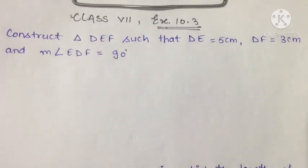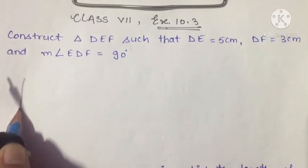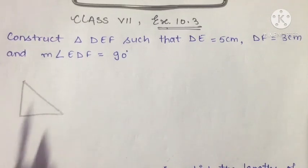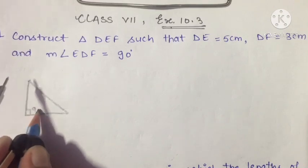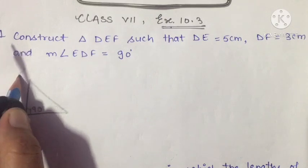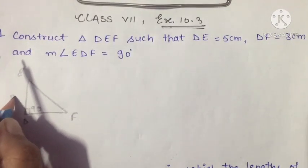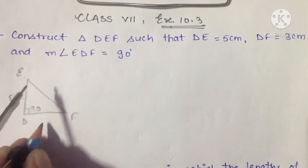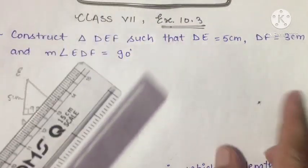Let's make a rough sketch first. DF and the angle at D is 90 degrees. In the rough sketch, angle D will be 90 degrees, with E and F on either side. DE is 5 cm and DF is 3 cm.